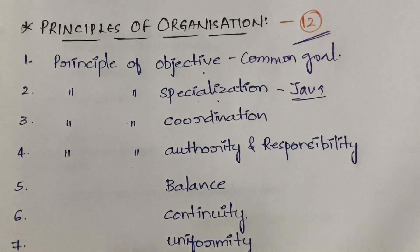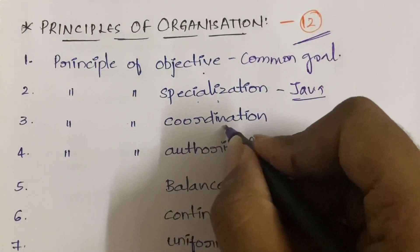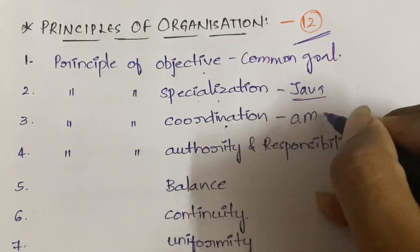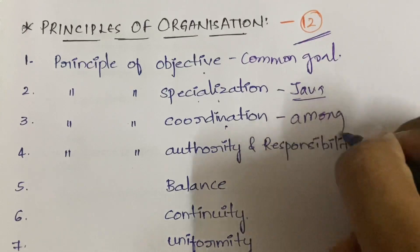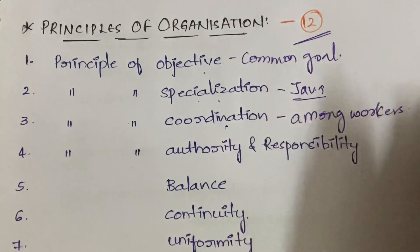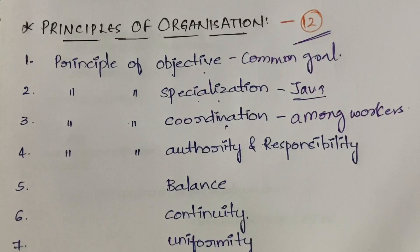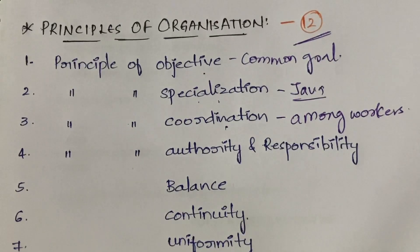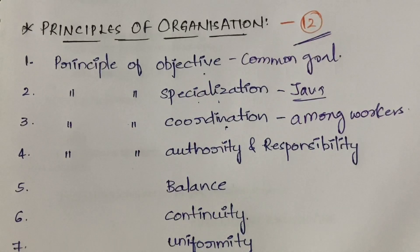The next is the principle of coordination. Coordination should be there among workers — what they are doing, what their next plan is. Everything should be planned and coordinated among the workers. It's not like one person will randomly do one thing and another person will do something else; coordination must be maintained.